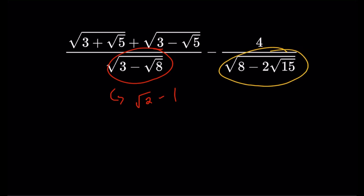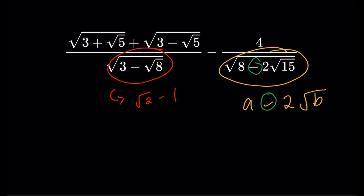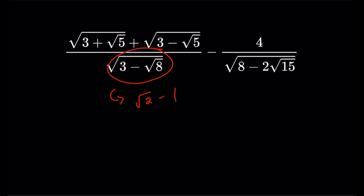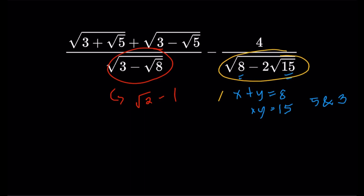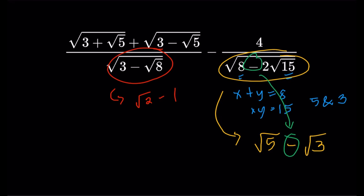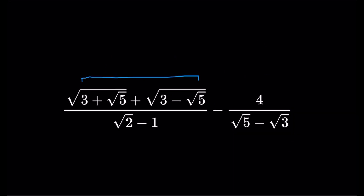Now let's take a look at the second denominator. It's already in the nice format of a minus 2 square root of b. We need to find two numbers that add up to 8 and multiply to 15. Simple trial and error: 5 and 3 work, because 5 plus 3 is 8 and 5 times 3 is 15. So we can write that as square root of 5 minus square root of 3. We've now successfully extracted both square roots in the denominators using Abu Kamir's method.